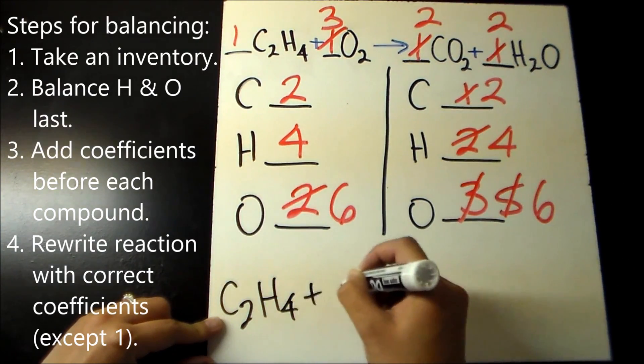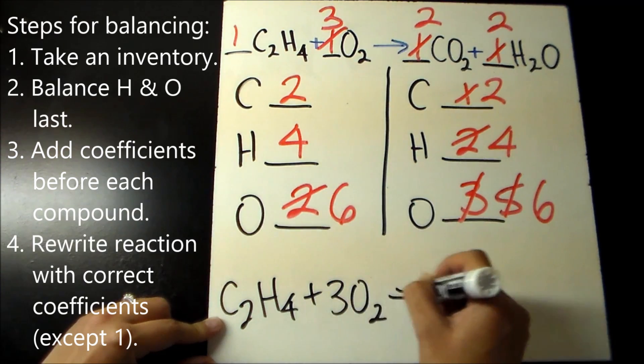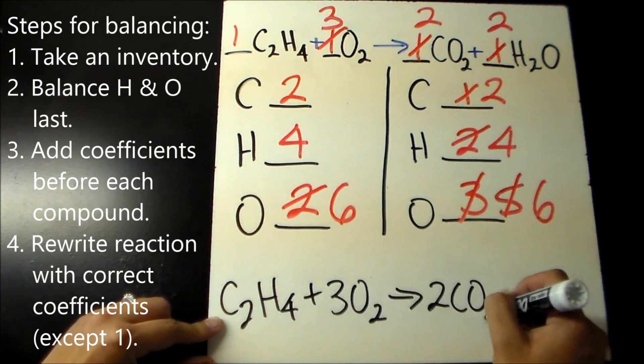Our final step is to rewrite the reaction with the correct coefficients, except the number 1, making sure that the coefficients are whole numbers and the least whole number ratio.